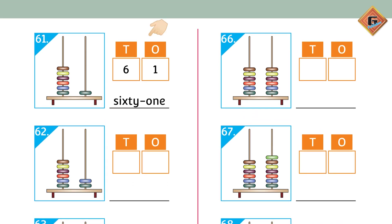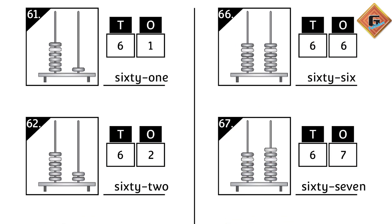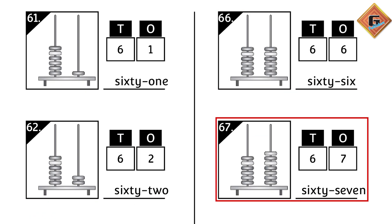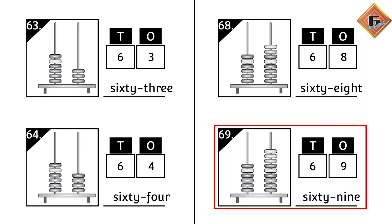Move to the next page. The first picture is of an abacus with one bead on the ones rod and six on the tens rod. We write 61, and the number name is sixty-one. Next ones are 62, 63, 64, 65, 66, 67, 68, 69.